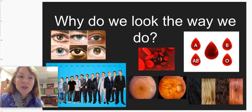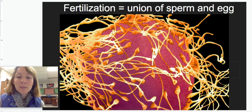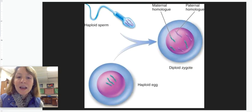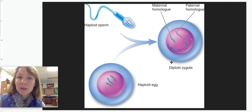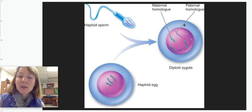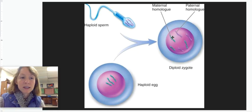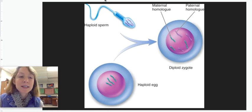In order to understand this question, we have to go back to that union between the sperm and the egg. As the sperm meets the egg, their chromosomes and DNA combine to form the zygote — the beginning embryo. The interaction between those chromosomes determines all of your genetic traits.